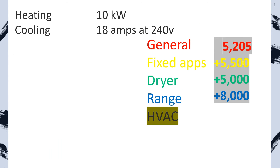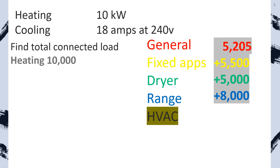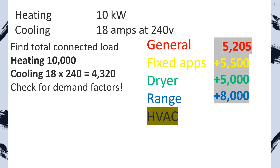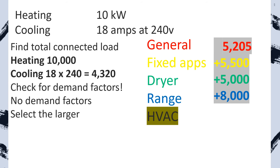Now for our HVAC VAs. We're going to take the larger of the heating or cooling. First, find our total connected load: our heating is 10,000, and our cooling is our amps multiplied by our volts, which equals 4,320. Now we check for demand factors — there are no demand factors on this portion, so we're just going to select the larger of the two, and we put down 10,000.